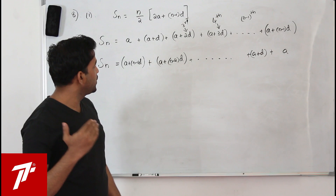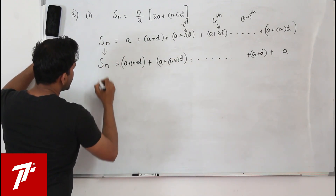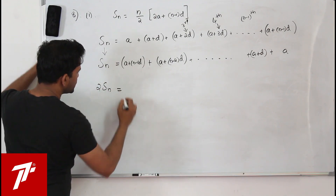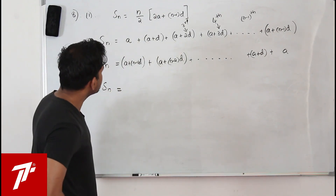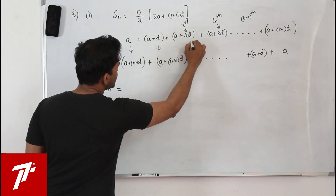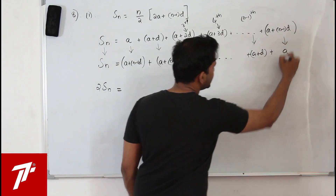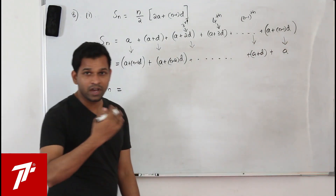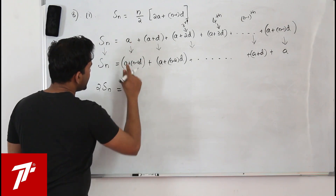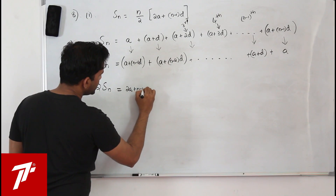Now I am going to add both series. Sn plus Sn gives 2Sn, since we don't know the value of Sn. I add the corresponding terms: first term with first term, second with second, and so on. When you add the first pair, you get a plus a plus n minus 1 into d, which is 2a plus n minus 1 into d.